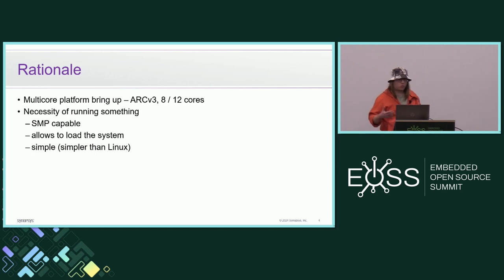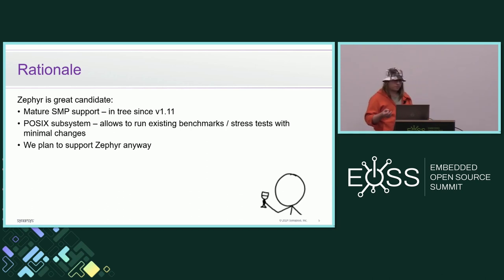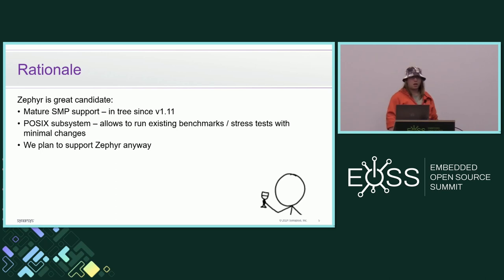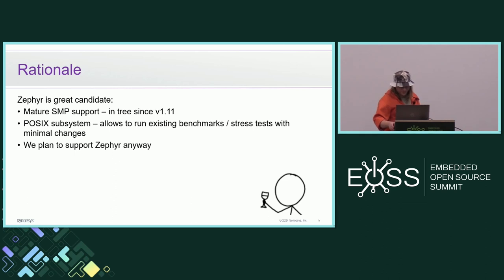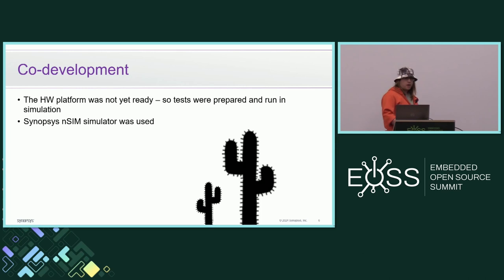Linux is too huge and too complicated to debug, so for the first steps we wanted something simpler. Zephyr is a great candidate — it has SMP support which was added in version 1.11 and has matured since. It has a POSIX subsystem which allows running existing benchmarks and stress tests with minimal changes, and we were planning to support Zephyr anyway. At the time our hardware was not ready, so initially tests were prepared and run in simulation — in our case we were using the Synopsis nSIM simulator.